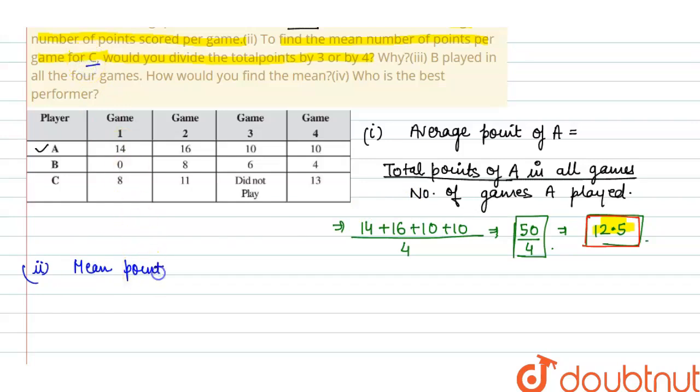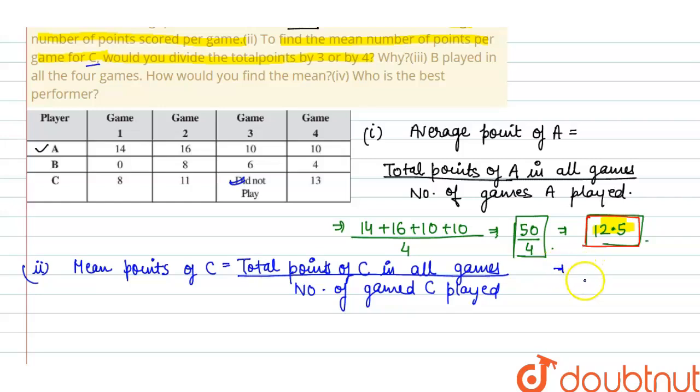It is total points of C in all games divided by number of games played by C. The number of games, because in one game C is not present, did not play. So we can say total number of games, so it is 3.